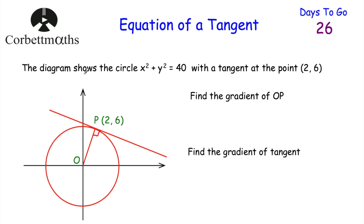So here we've got a question. It says the diagram shows a circle x squared plus y squared equals 40 and a tangent at the point (2, 6). So the point (2, 6) is a point on the circle, and the tangent is the line that touches the circle and carries on.